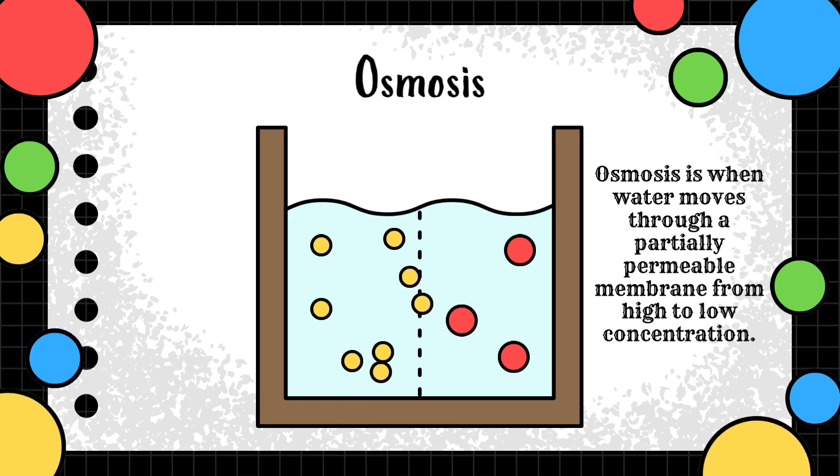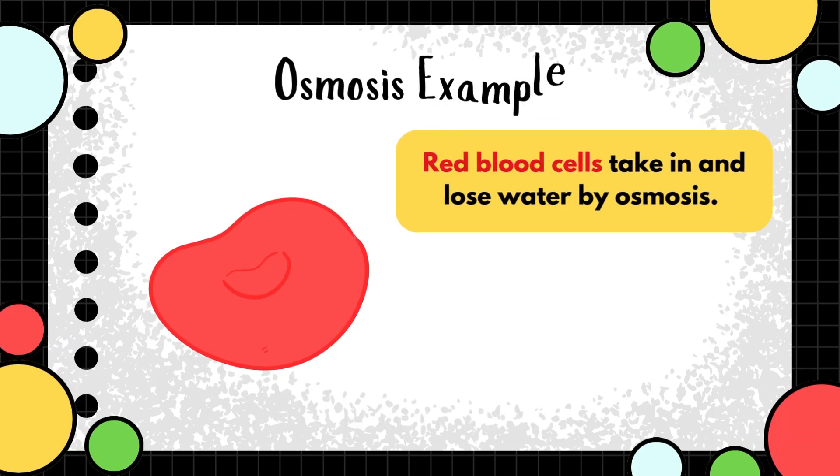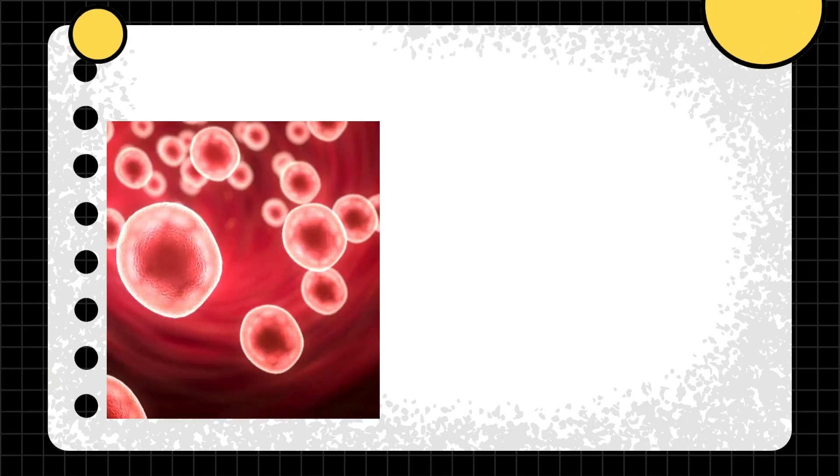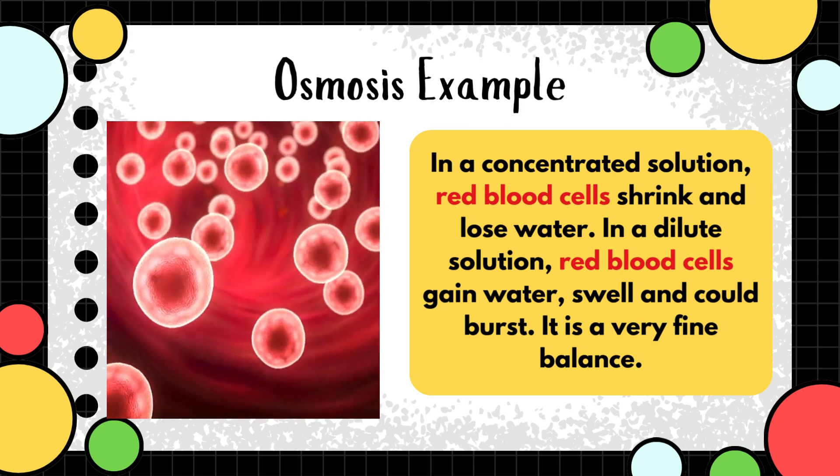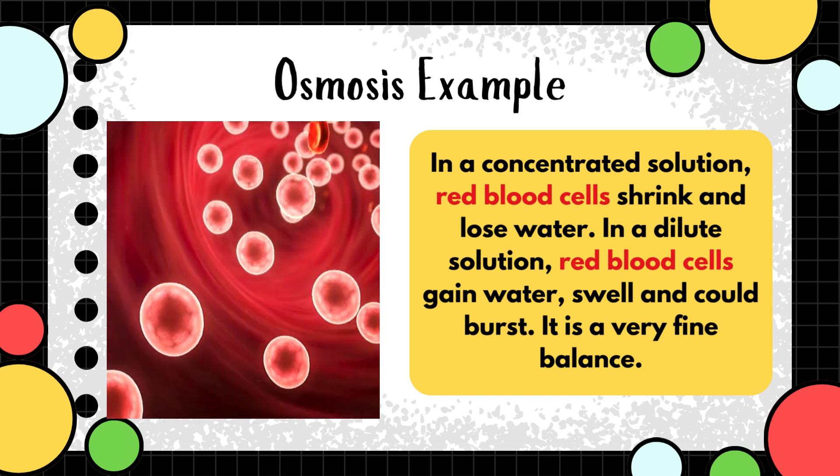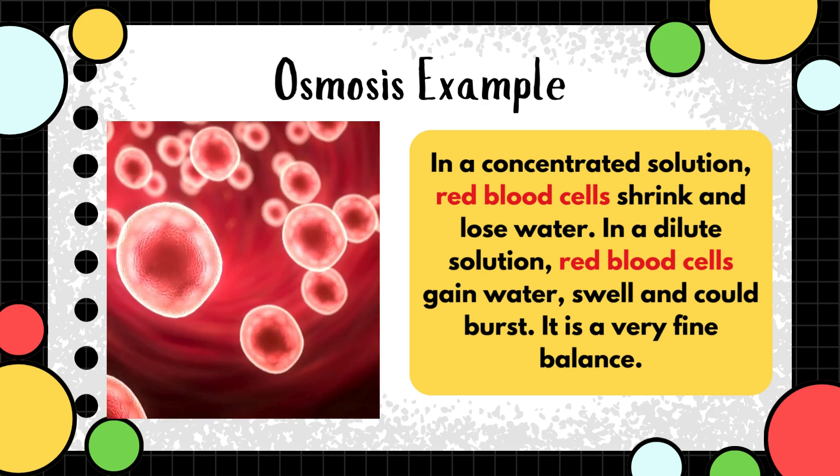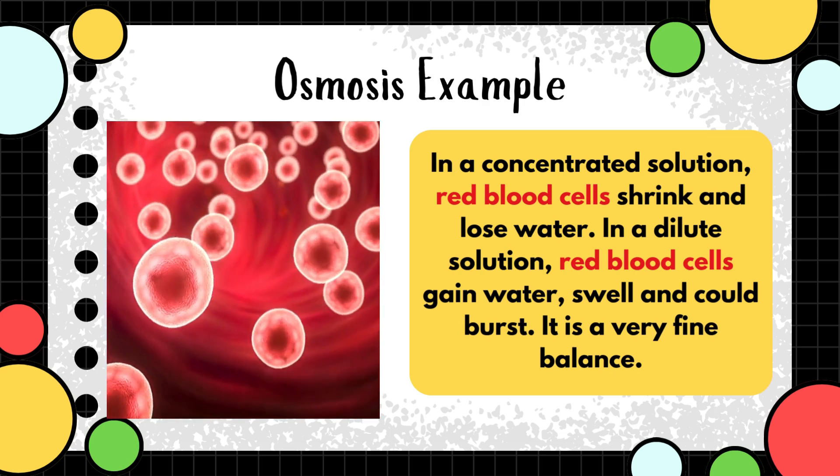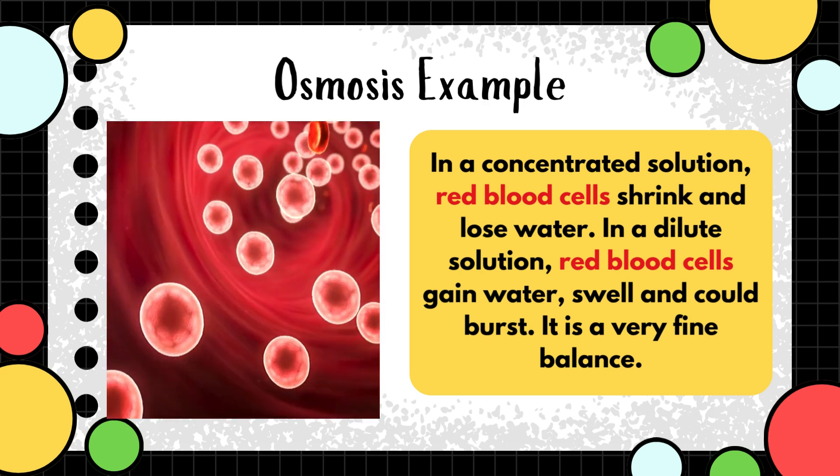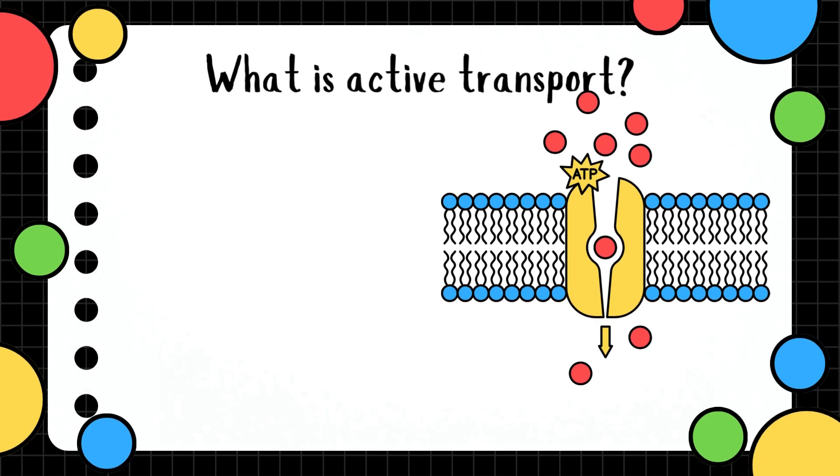Osmosis is when water moves through a partially permeable membrane from high to low concentration. Example: red blood cells take in and lose water by osmosis. In a concentrated solution, red blood cells shrink and lose water. In a dilute solution, red blood cells gain water, swell, or could burst. So it's very balanced.